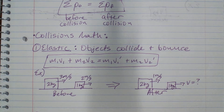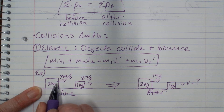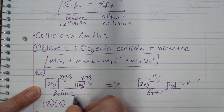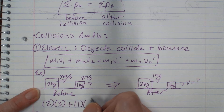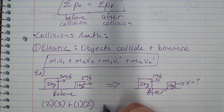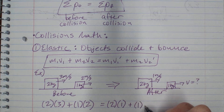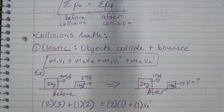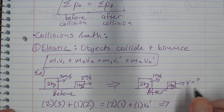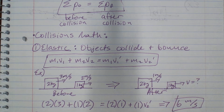Plugging into the formula: m1 is two kilograms, v1 is positive three (right is positive), plus m2 of one times positive two. That equals two times positive one plus one times v2-prime, the final velocity of the second object. Two times three is six, plus two is eight. Subtract two, giving six. Six divided by one means the final velocity v2-prime is six meters per second.